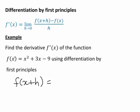Therefore instead of having x² + 3x - 9, f(x+h) will be (x+h)² + 3(x+h) - 9.